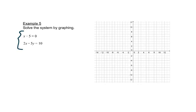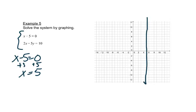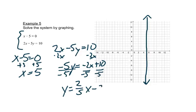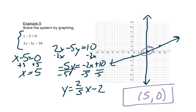Let's look at this next system. We have x minus 5 equals 0 — we add 5 to both sides and get x equals 5. That's a vertical line that crosses the x-axis at 5. For the other equation, we subtract 2x from both sides to get negative 5y equals negative 2x plus 10, then divide each part by negative 5 to get y equals 2/5 x minus 2. We plot the y-intercept at negative 2 and go up 2 over 5. These two lines cross at the point (5, 0), which is the answer to our system.